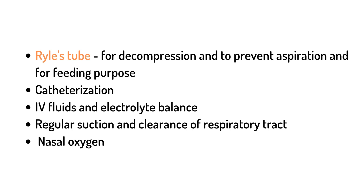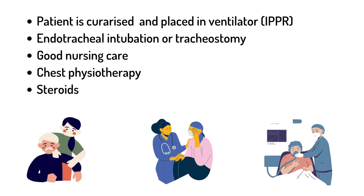A Ryle's tube can be given initially for decompression and to prevent aspiration of food or gastric contents, and later used for feeding. The patient may also be under catheterization, given IV fluids and electrolyte balance, and have regular suction and clearance of the respiratory tract along with nasal oxygen. The patient is sedated and placed on a ventilator (IPPV — increased positive pressure respiration), with endotracheal intubation or tracheostomy if the patient cannot breathe. Good nursing care, chest physiotherapy, and steroids in rare cases of carditis are also provided.